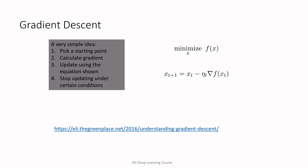The idea of gradient descent is pretty simple. Suppose we want to minimize the function f(x). We pick some arbitrary starting value for x, calculate the value of the gradient of the function at that location, and use that gradient to get an updated value for x using the update equation. Once updated, we calculate the gradient at the new location and repeat. We continue doing this until no more updating is necessary. There is a link for further reading.